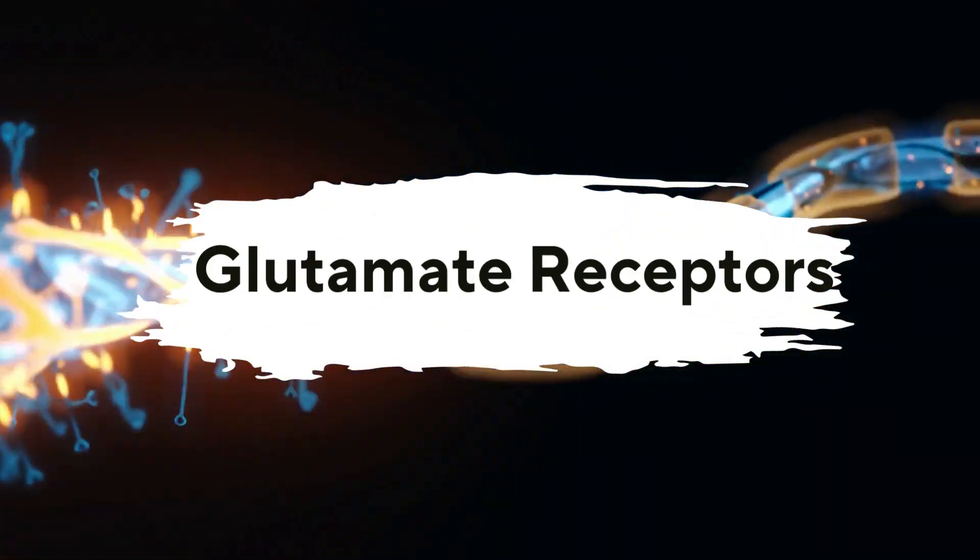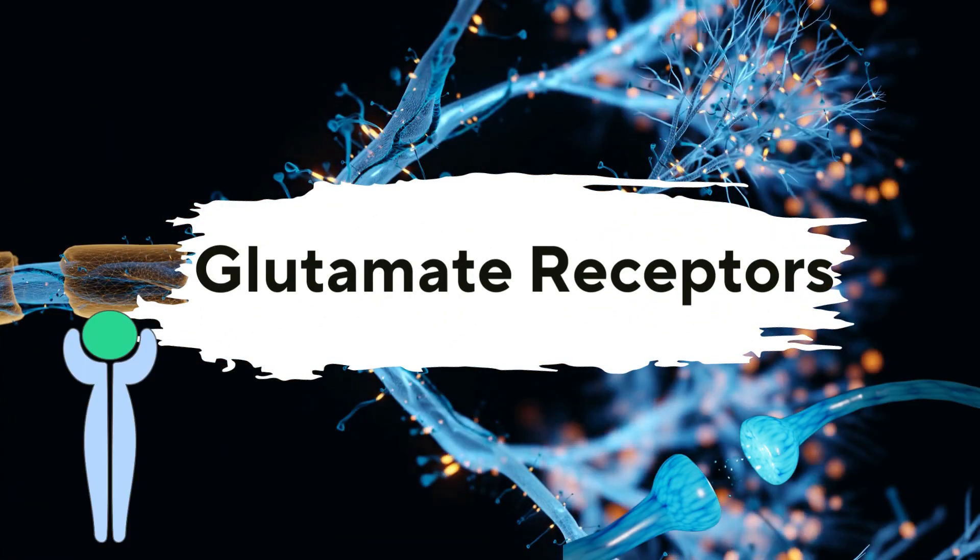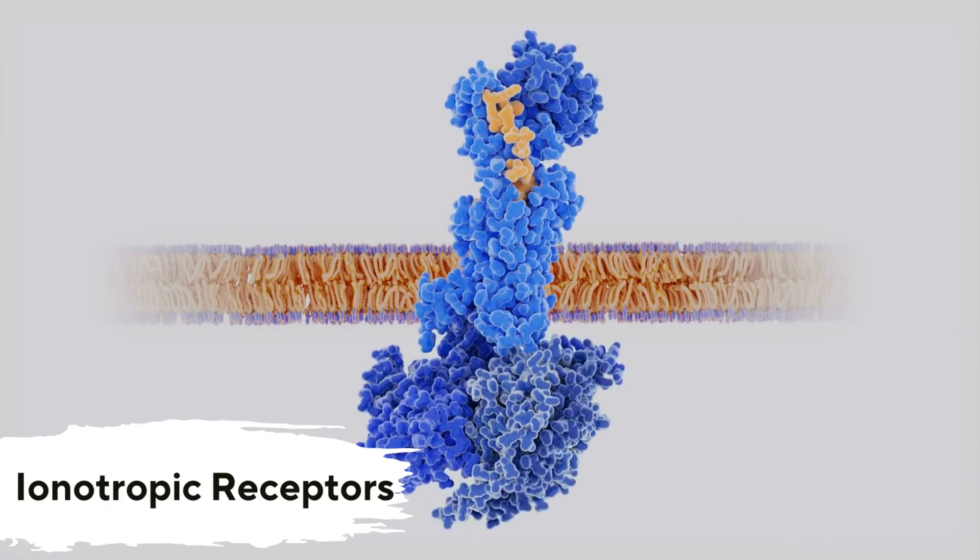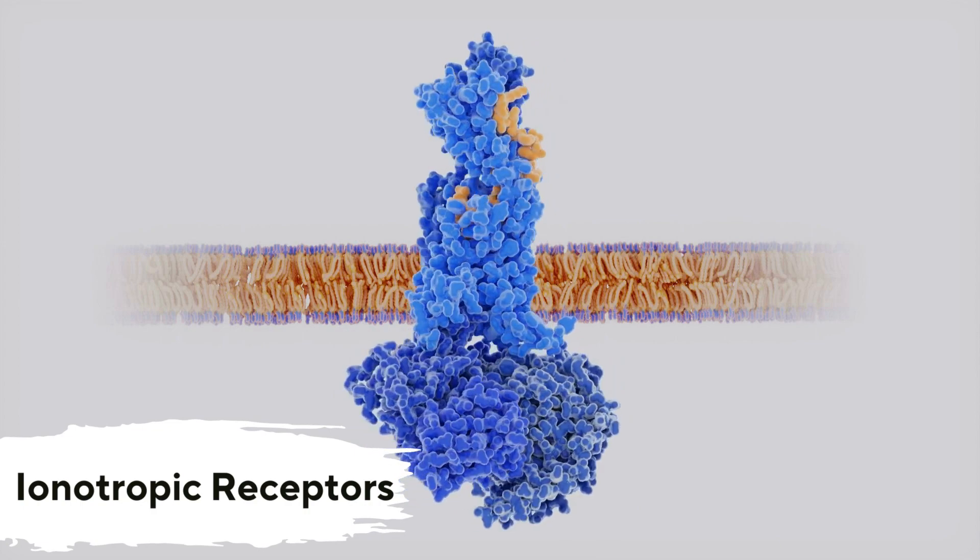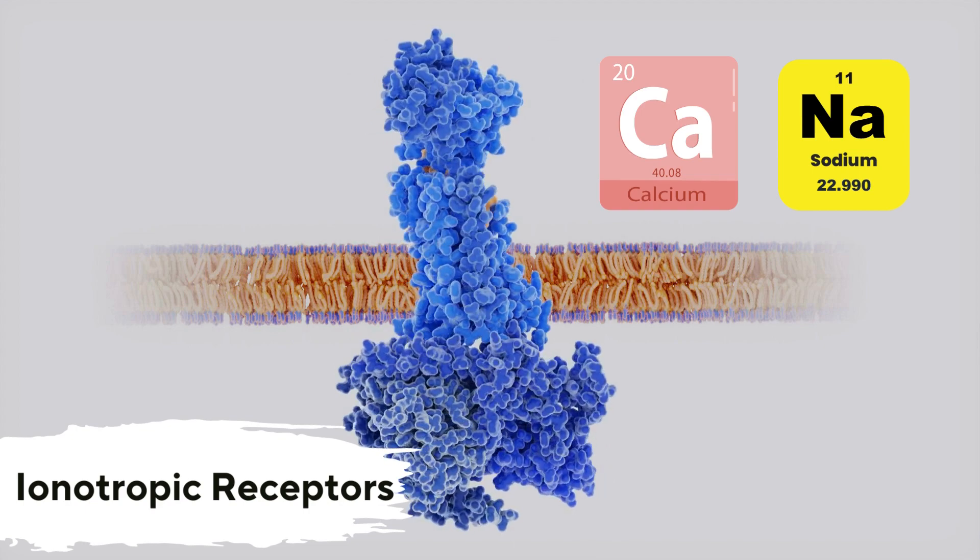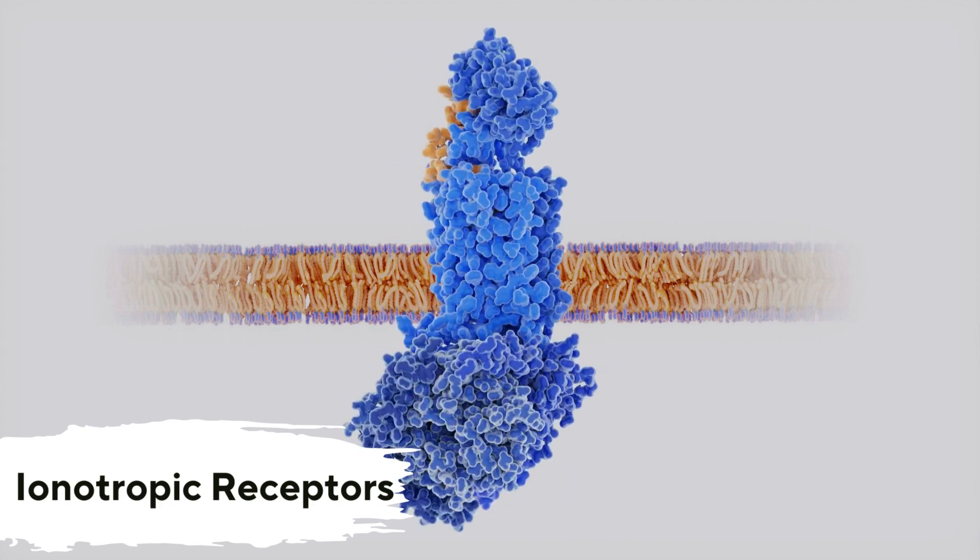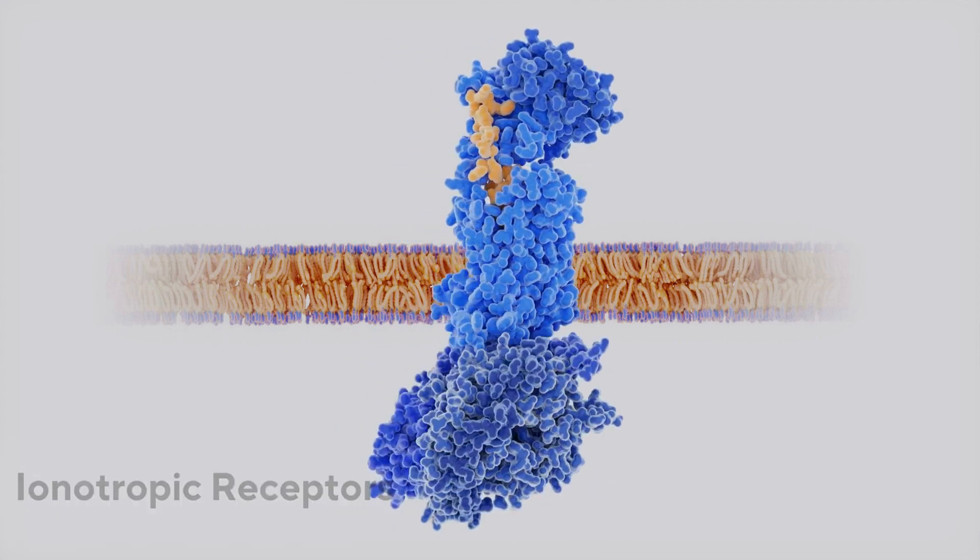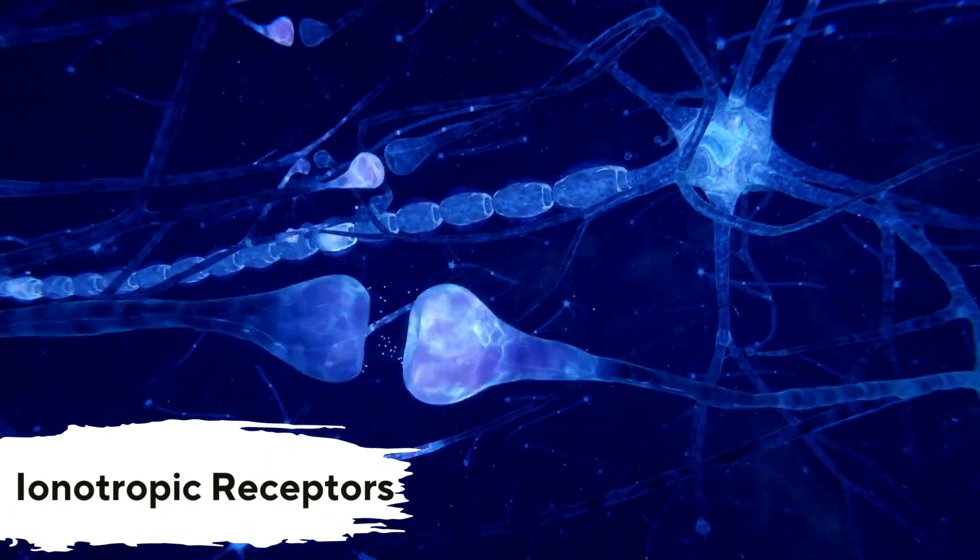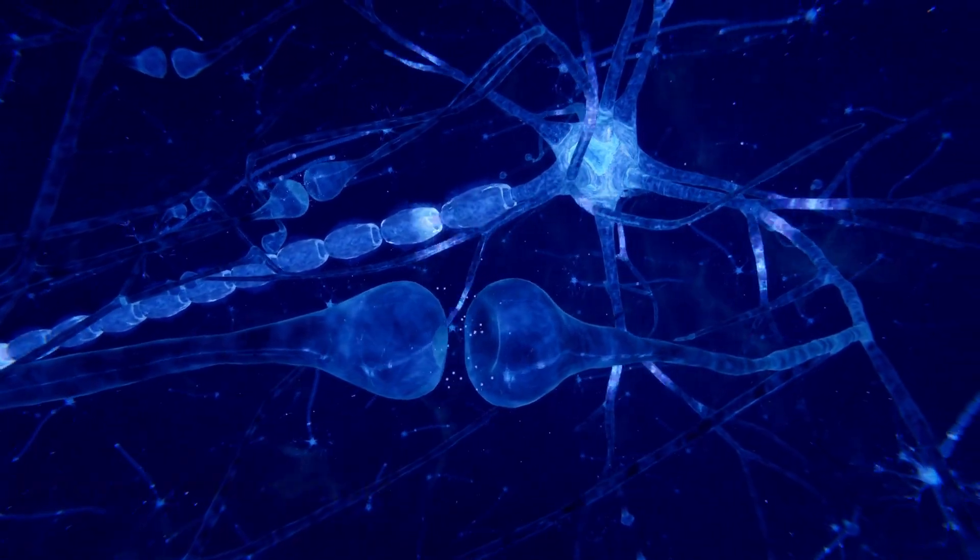Glutamate Receptors. There are two main types of glutamate receptors: ionotropic and metabotropic. Ionotropic receptors are ion channels that open in response to glutamate binding, allowing ions like calcium and sodium to flow into the postsynaptic neuron. This influx of ions leads to depolarization and excitatory effects. NMDA receptors and AMPA receptors are two prominent types of ionotropic glutamate receptors.